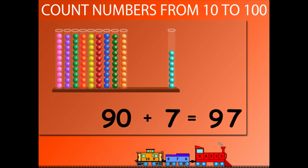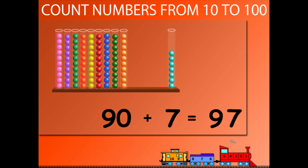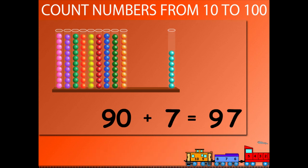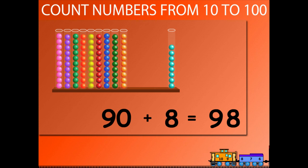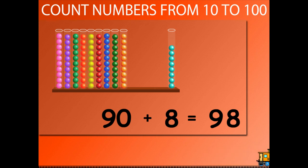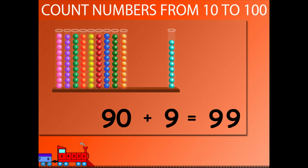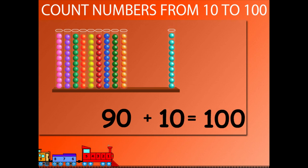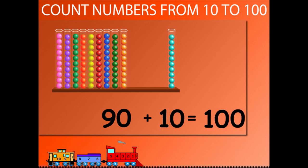90 plus 7 is equal to 97. 90 plus 8 is equal to 98. 90 plus 9 is equal to 99. 90 plus 10 is equal to 100.